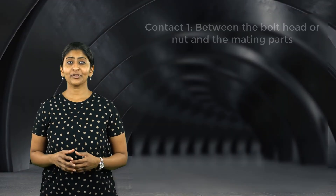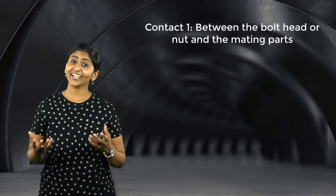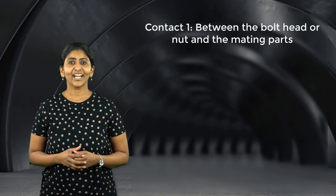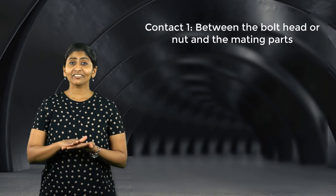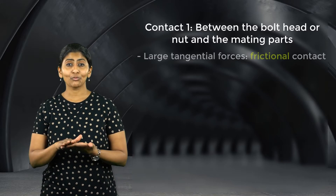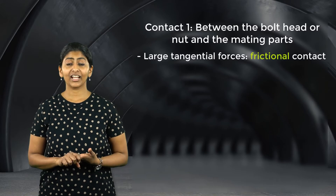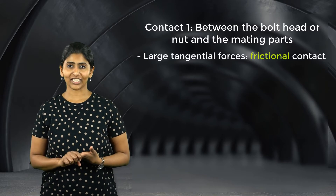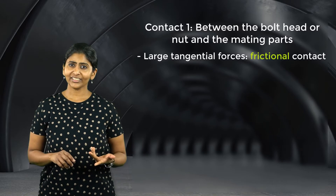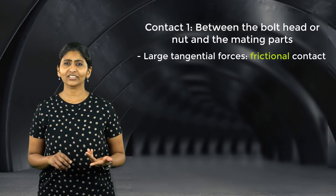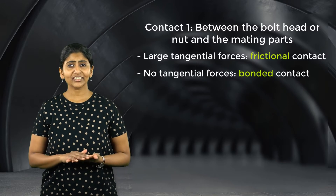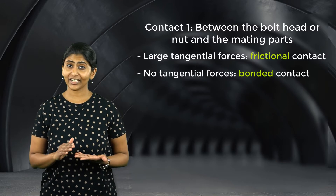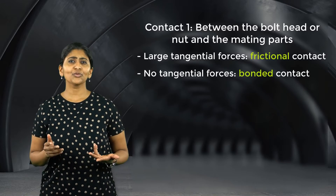Let's discuss the type of contact to be used between the bolt head or nut and the mating component. When tangential forces are significant, relative sliding may occur between the bodies in contact. In such cases, we use frictional contact. On the other hand, if tangential forces are not significant and we do not expect separation to occur between the contact surfaces, we may use bonded contact.